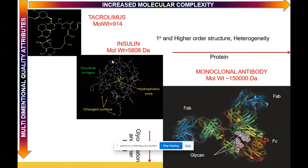This is also evident from the picture I have shown a number of times. As you move from a small molecule to a bigger molecule, as the complexity of the structure increases, so does the complexity of understanding the function in context with the structure. And all these eventually lead to what you call critical quality attributes — quality attributes that are critical to define the process and to eventually define the function of the product.